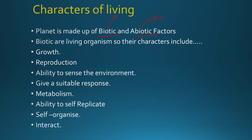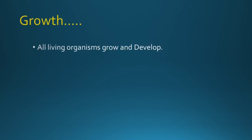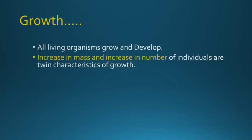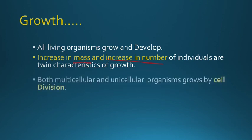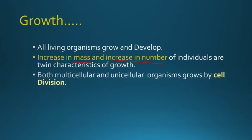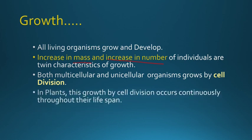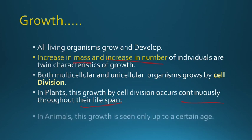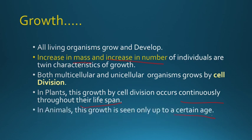Let us look in detail about them. All living organisms grow and develop. What is growth? Increase in mass — dry weight — and increase in the number of individuals. These are two important characters of growth. Both multicellular and unicellular organisms grow by cell division, usually by mitotic divisions. In plants, this growth by cell division occurs continuously throughout their lifespan. But in animals, growth is seen up to a certain age only.